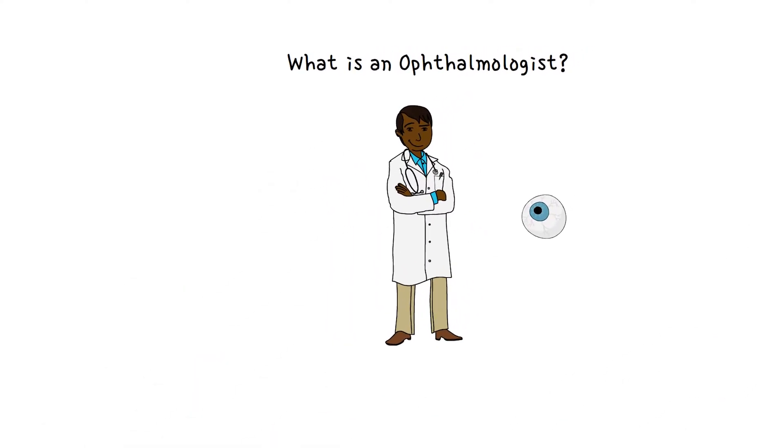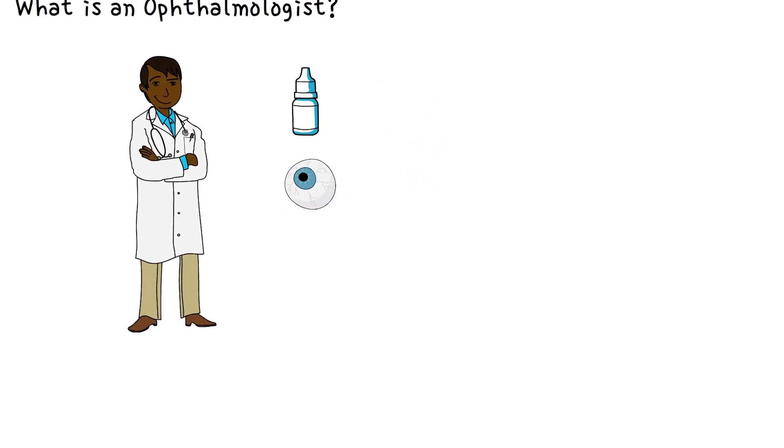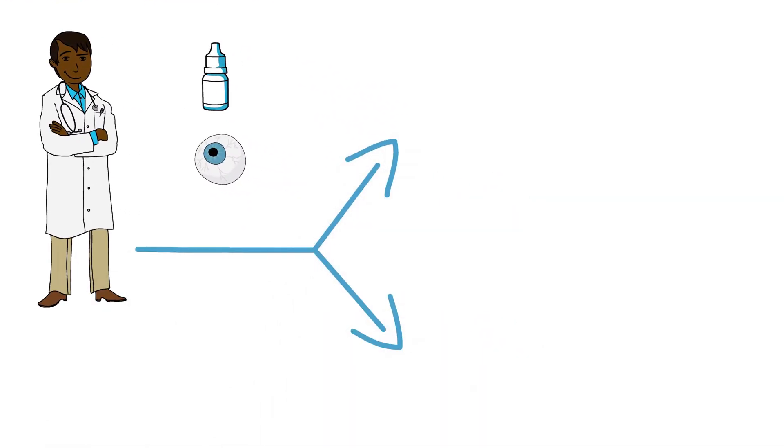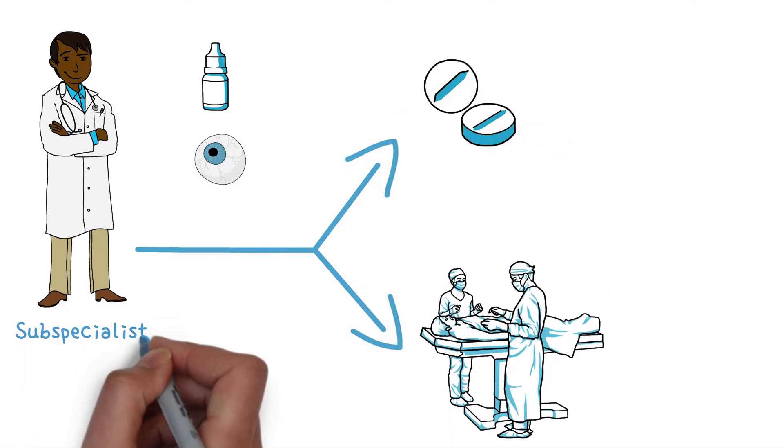Although ophthalmologists are trained to treat all eye problems and conditions, some specialize in a specific area of medical or surgical eye care. This person is called a subspecialist.